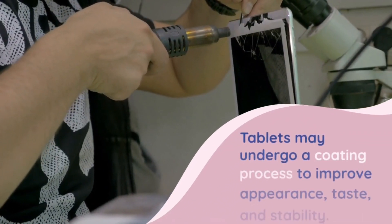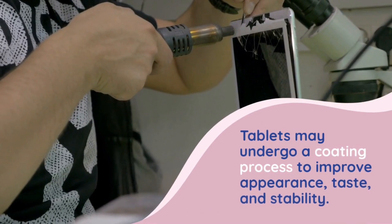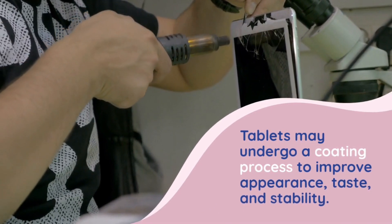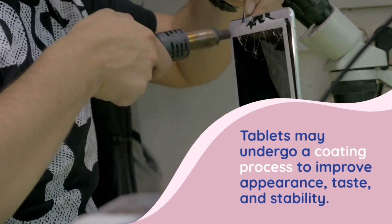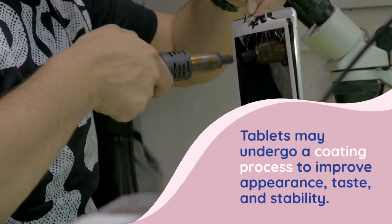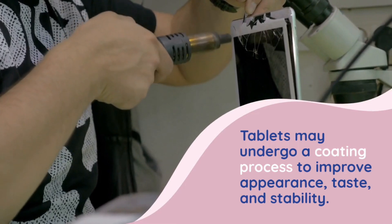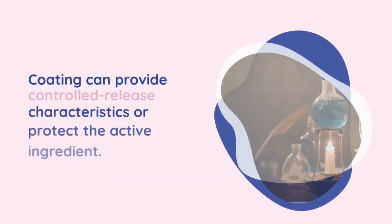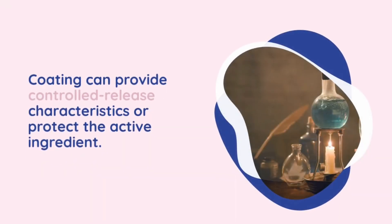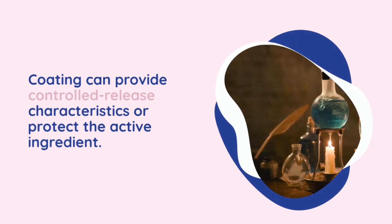Stage 8: Packaging. Once the tablets are manufactured, they are packaged into suitable containers such as blister packs, bottles, or strip packs. Packaging helps protect the tablets from moisture, light, and physical damage, while also providing important information such as dosage instructions, expiration dates, and batch numbers.